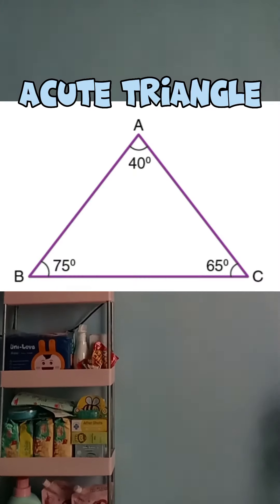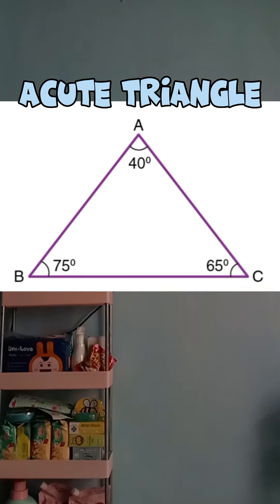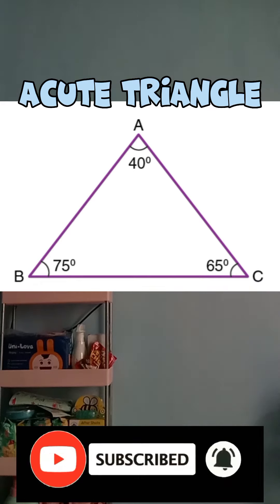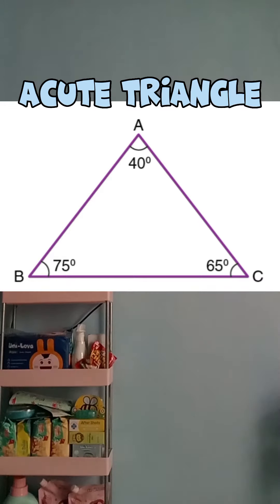An acute triangle is a type of triangle in which all three internal angles of the triangle are acute, meaning less than 90 degrees. Acute triangles are also called acute angled triangles. Even though the length of the sides of acute triangles differs, the interior angles are never more than 90 degrees.